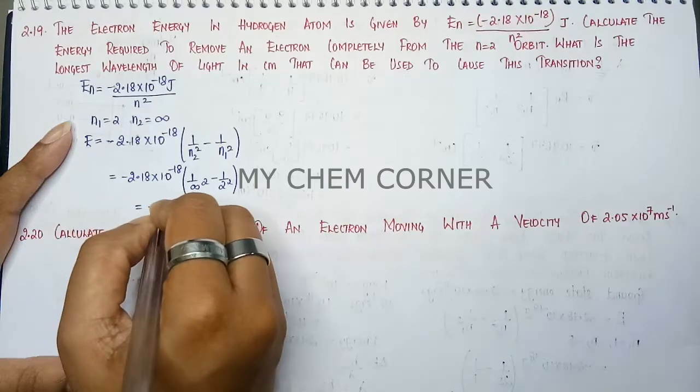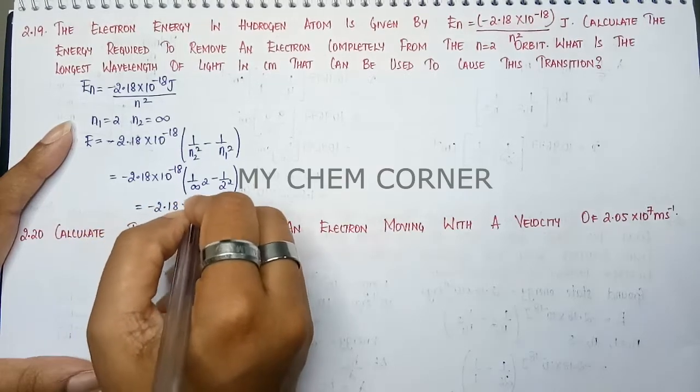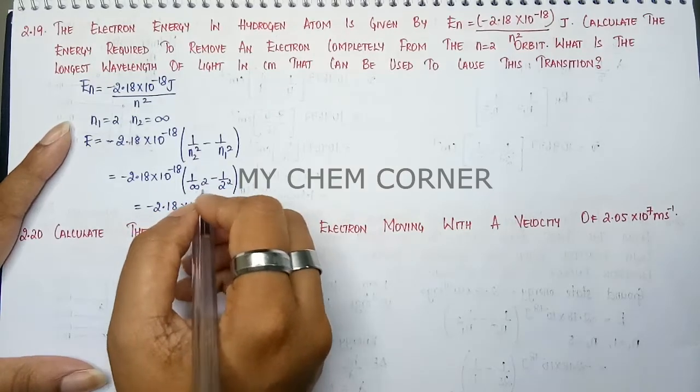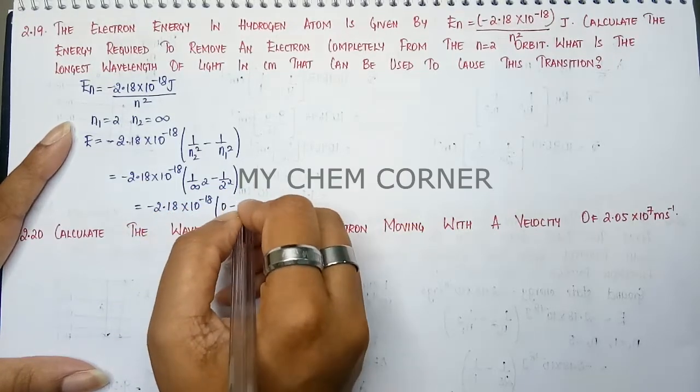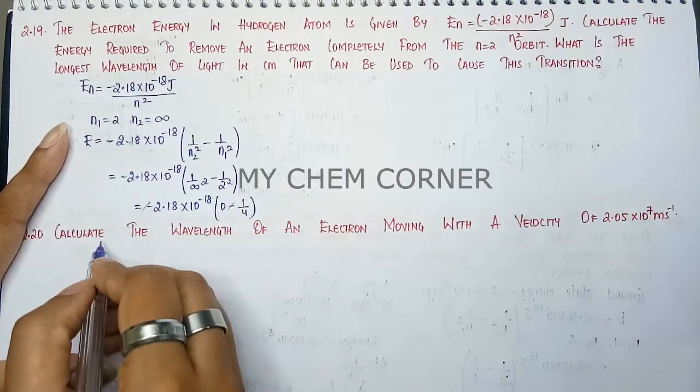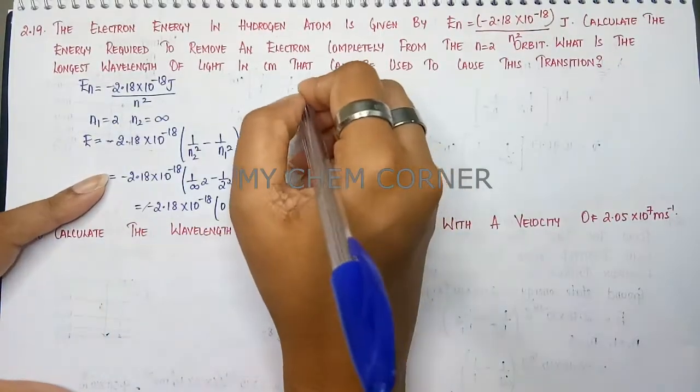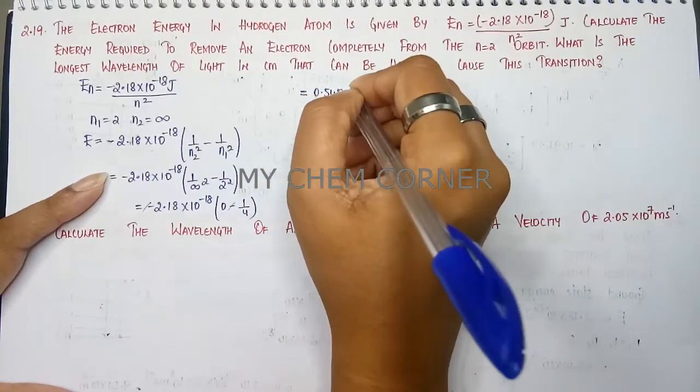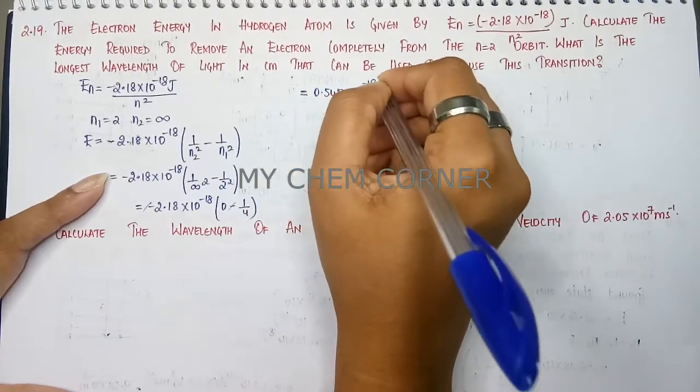Therefore, you get 2.18 times 10 to the power minus 18 into 1 by infinity square is going to be 0 minus 1 by 4. This minus and minus will get cancelled here and you will get your answer as 0.545 into 10 to the power minus 18 Joule.